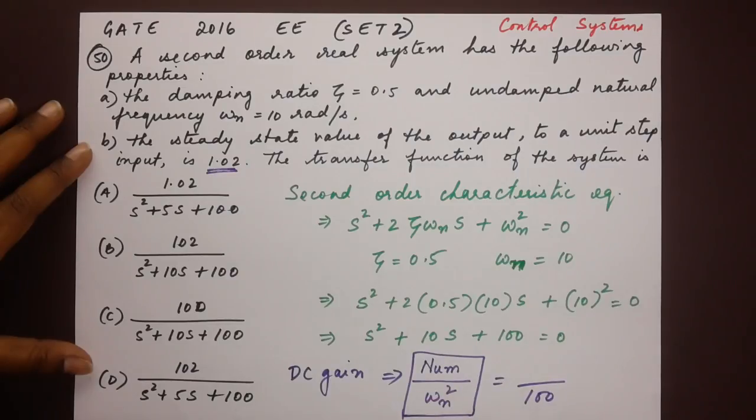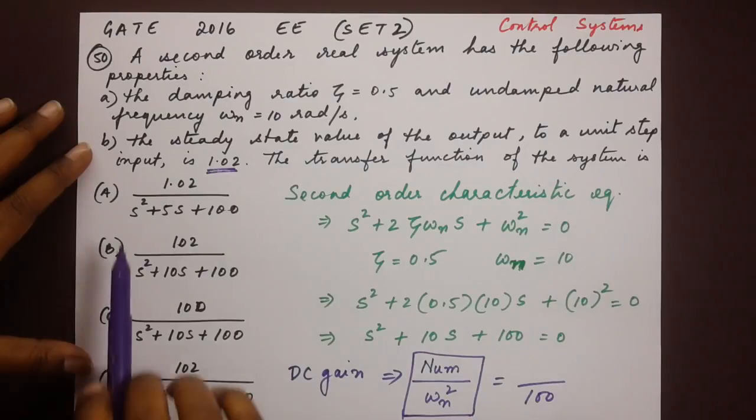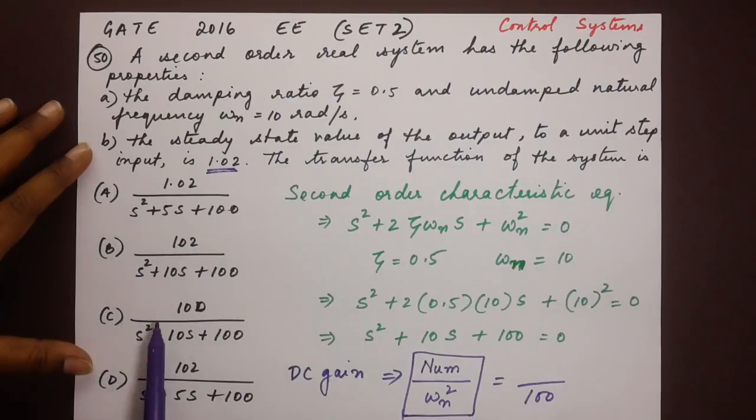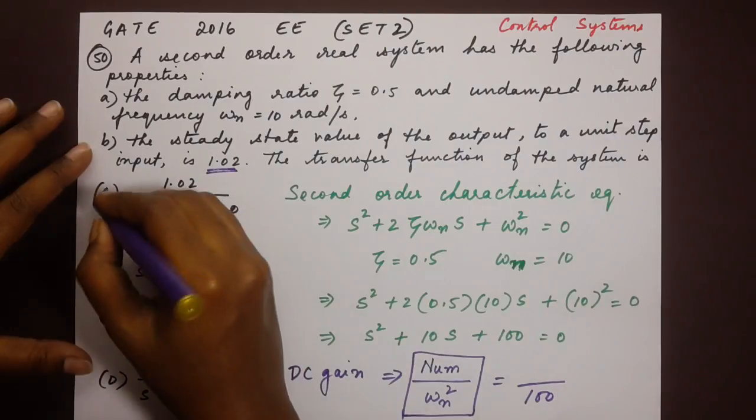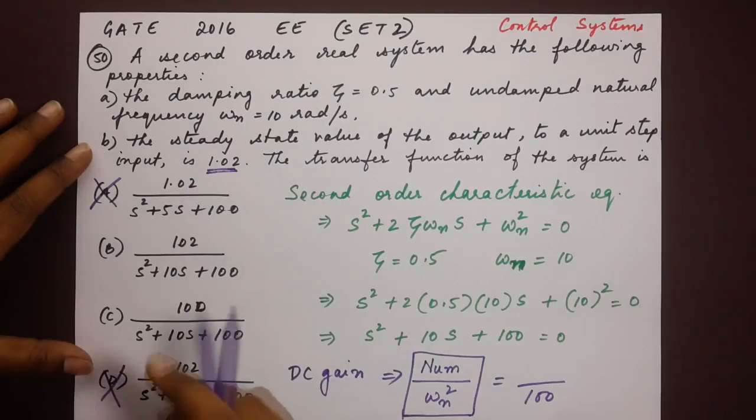In order to check, we have ruled out options A and D. It cannot be A, it cannot be D. It has to be either B or C because of the denominator. The denominators of both of these options match the second order characteristic equation that we have just found. Let us cross off these two and concentrate on just B and C.